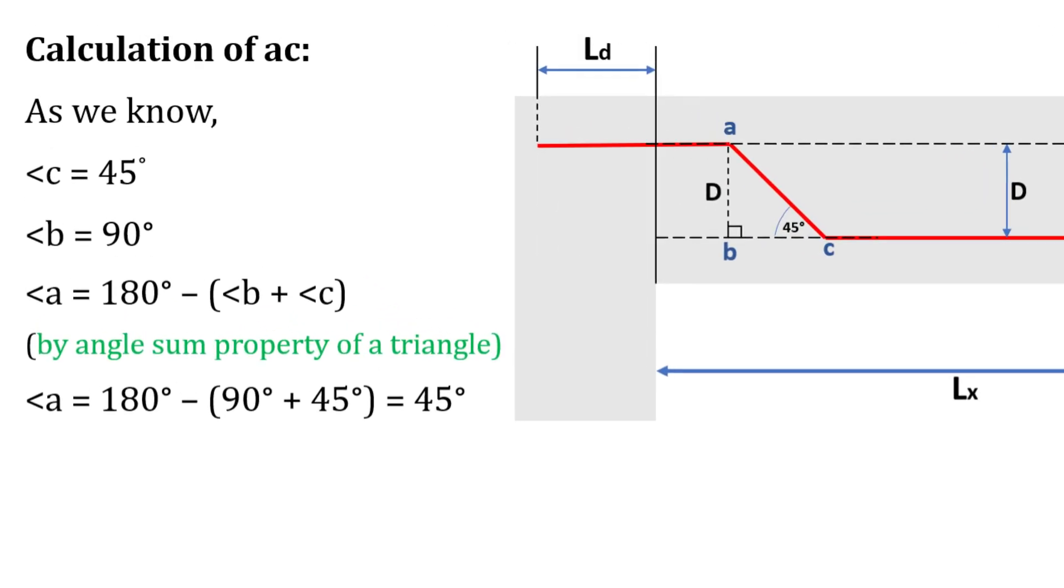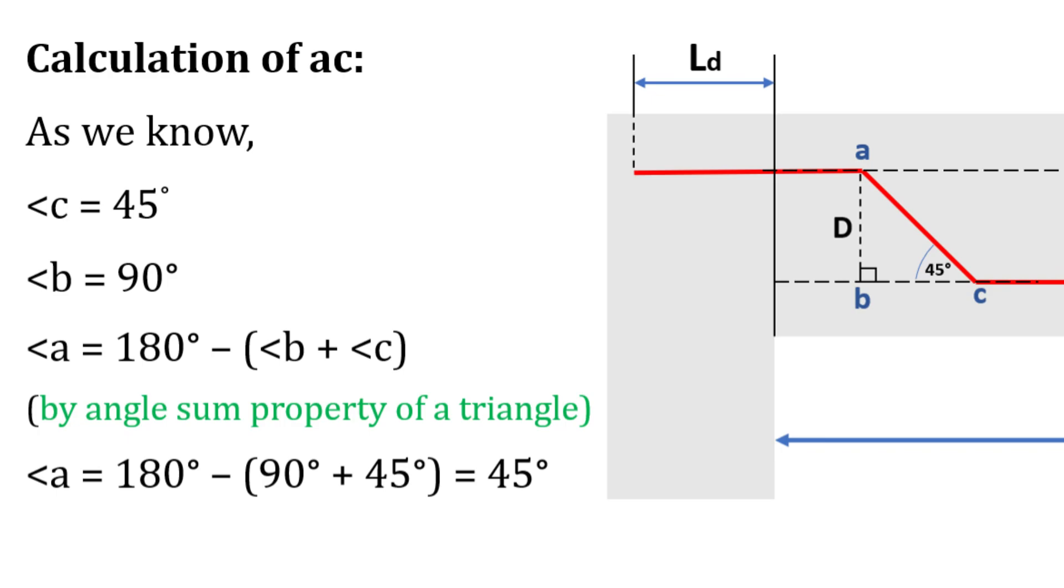As we know, the angle at point C is 45 degrees because the cranked bar is bent up at an angle of 45 degrees. The angle at point B is 90 degrees and the angle at point A can be calculated as 180 minus the sum of angles B and C which is 45 degrees.